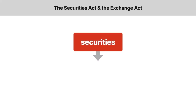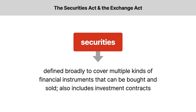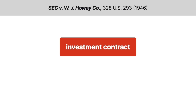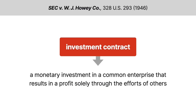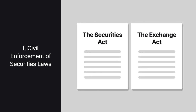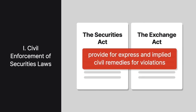The statutes define securities broadly to cover multiple kinds of financial instruments that can be bought and sold, like stocks and bonds. The term also includes investment contracts. Under the Supreme Court's Howey test, an investment contract is a monetary investment in a common enterprise that results in a profit solely through the efforts of others. Both statutes provide for express and implied civil remedies for violations.